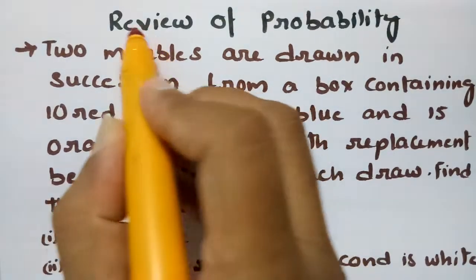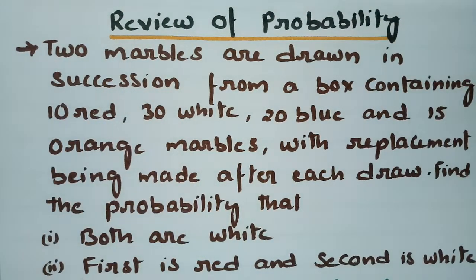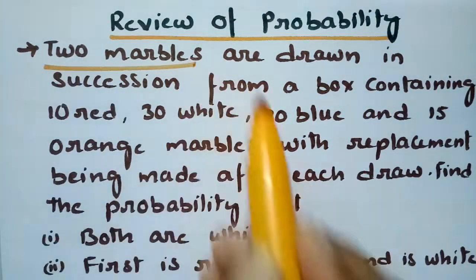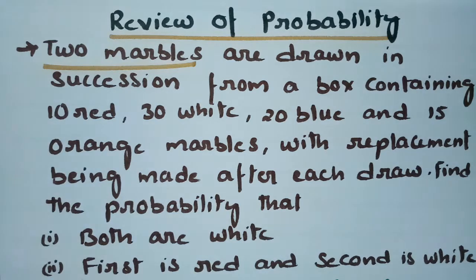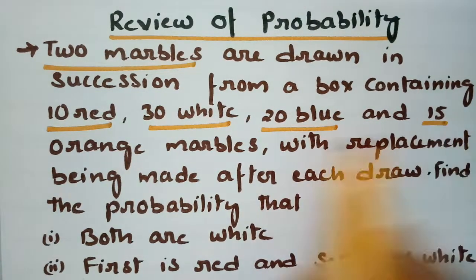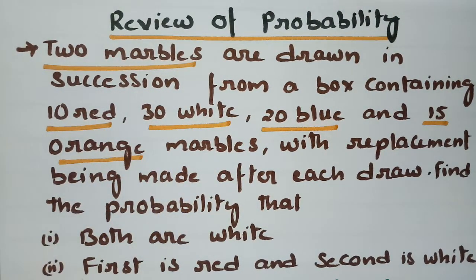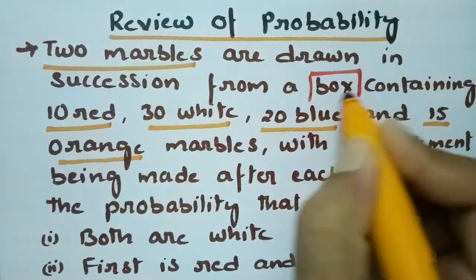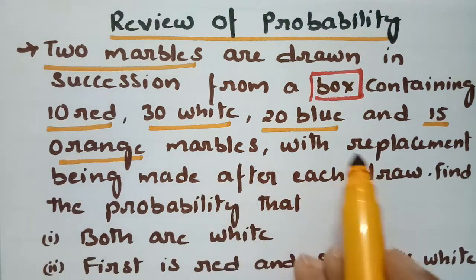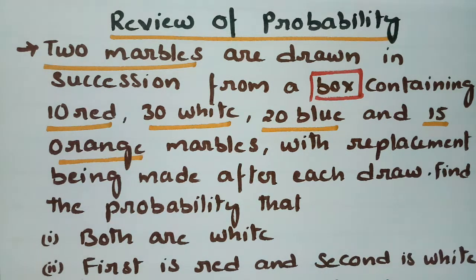This problem is from probability — a review of probability with the most important questions. Two marbles are drawn in succession from a box containing 10 red, 30 white, 20 blue, and 15 orange marbles. The marbles are drawn with replacement, meaning after each draw the marble is replaced before the next draw.